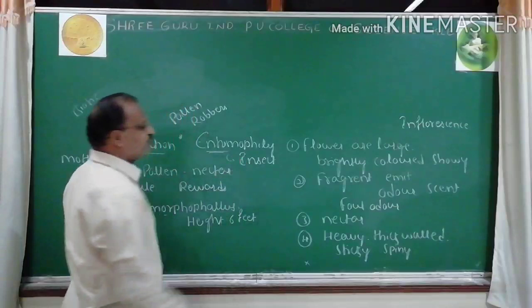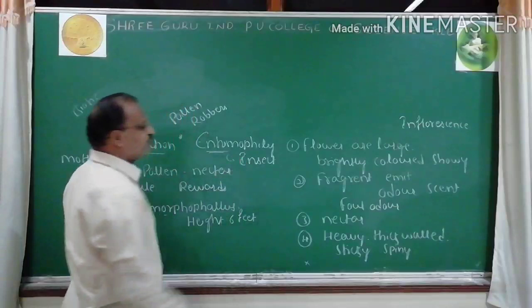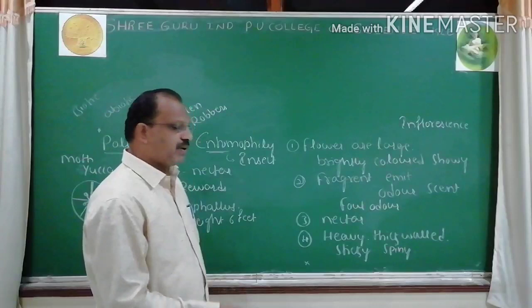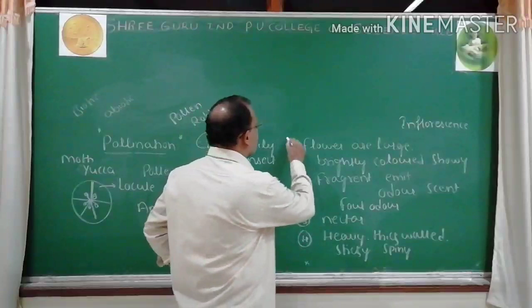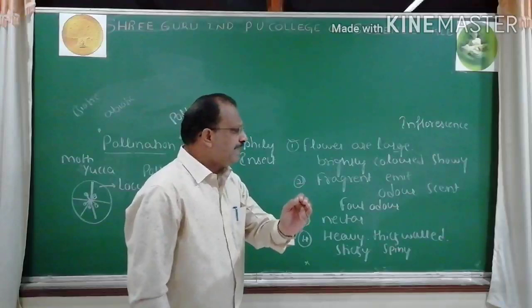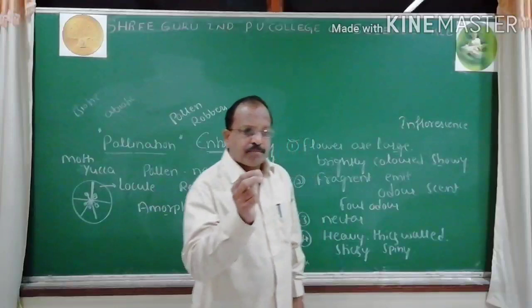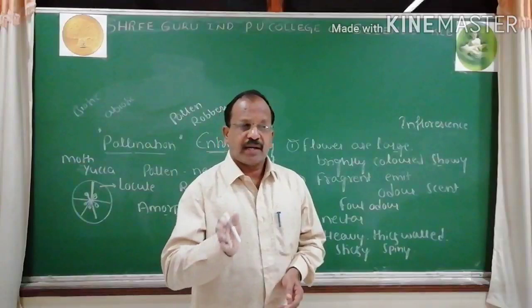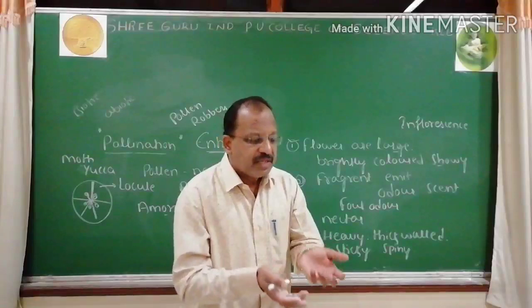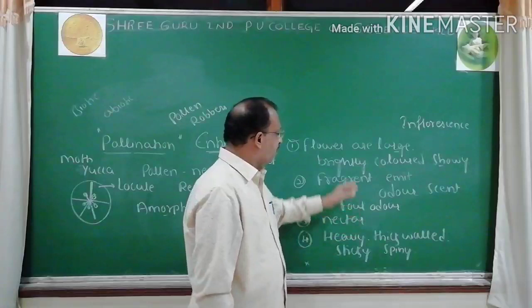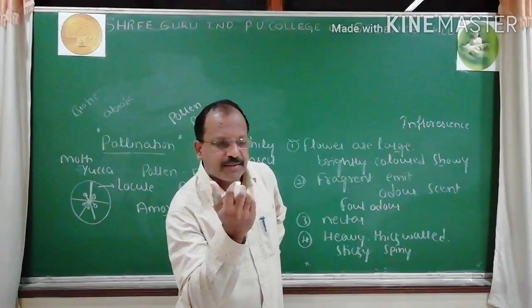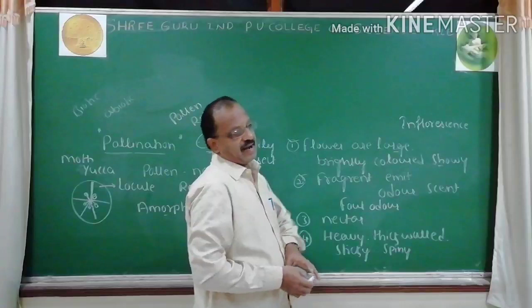Pollination by the agency of insects is called entomophily. Characters of entomophilous flowers: number one — flowers are large, brightly colored and showy. Any part of the flower may be modified to increase beauty and attract insects for pollination. They produce fragrance — a sweet odor or scent to attract insects. Even foul odor is produced by certain flowers pollinated by flies and beetles.